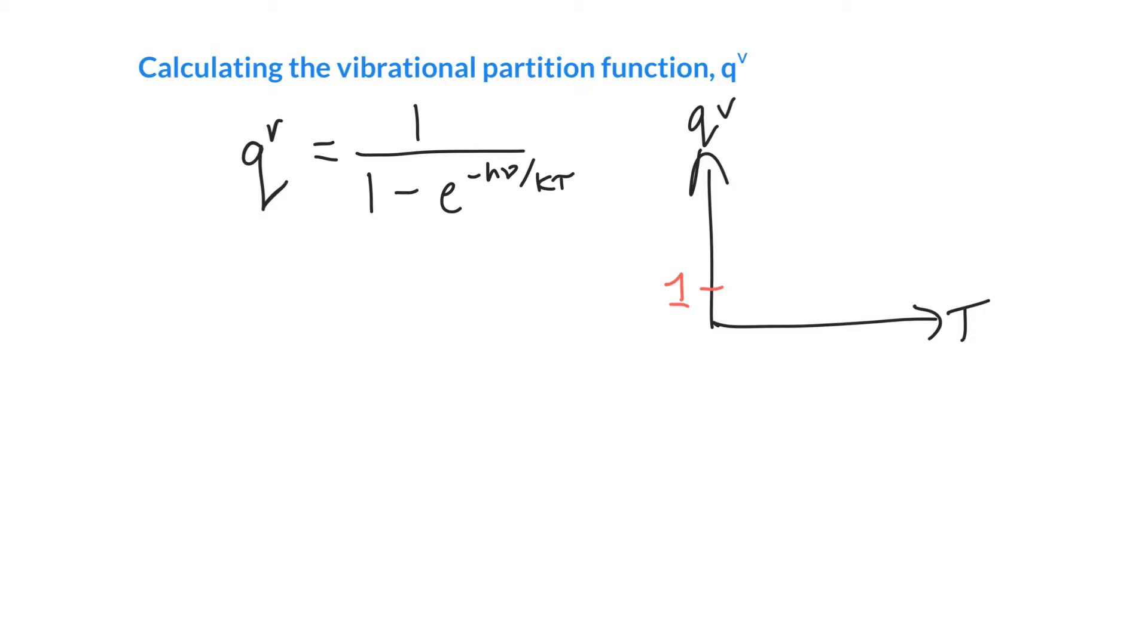So if we just kind of sketch this functional form, it's going to look something like this. Actually, it's going to go off to infinity as the temperature approaches infinity. So at low temperature, we've only really got one state available, the ground vibrational state. And as we increase the temperature, we just have that ladder of accessible states. And the hotter it is, the more likely we can store energy in one of those higher vibrational states.